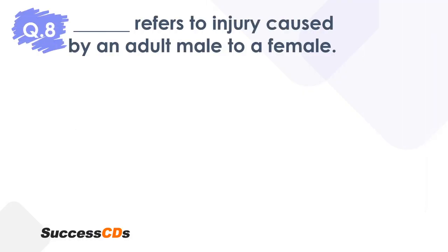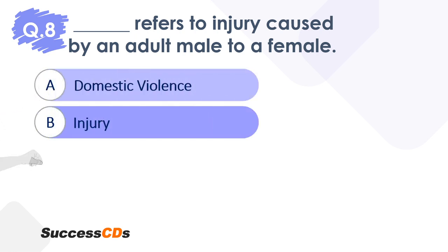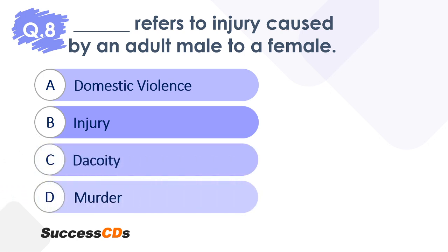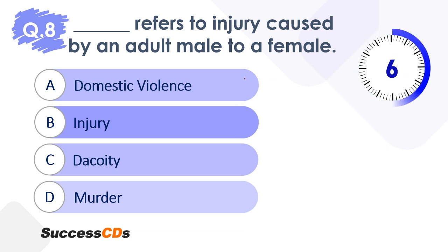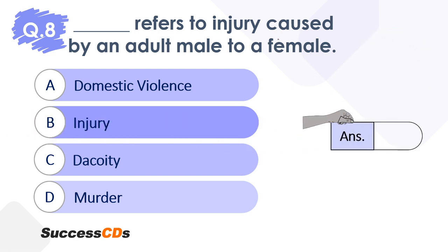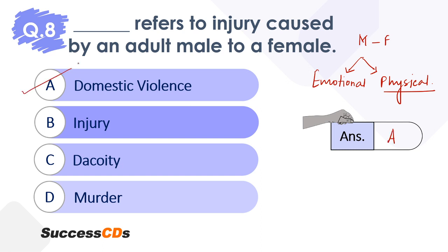Moving to question 8. Dash refers to injury caused by an adult male to a female. Is it domestic violence, injury, dacoity, or muddle? Time begins now. Quickly tell me the right answer — it's an easy question. Injury here means any type of harm. This injury can be emotional or it can be physical as well. Even if emotional injury is caused by a male to a female, it will classify under domestic violence. Hence, the correct answer is option A.